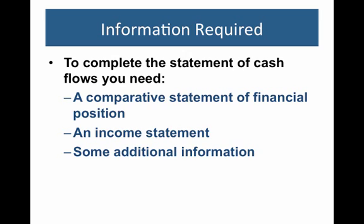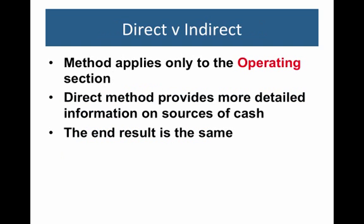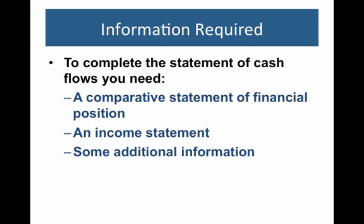So what do you need in order to complete the statement? First, a comparative statement of financial position — meaning you need two years' worth of data. Because the statement of position is for a point in time, you need the one for the end of the current period and the one from the end of the last period, so we can figure out the cash used between those two points in time. You also need an income statement for the period in question, and then typically some additional information, like did you buy or sell any equipment, or did you pay any dividends.